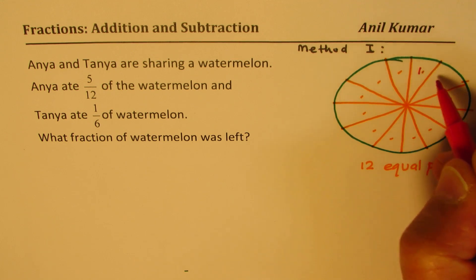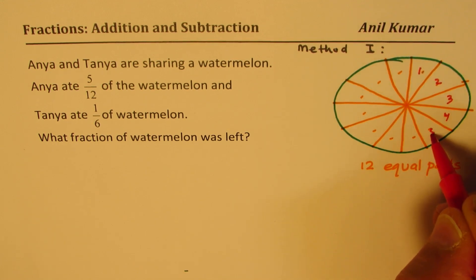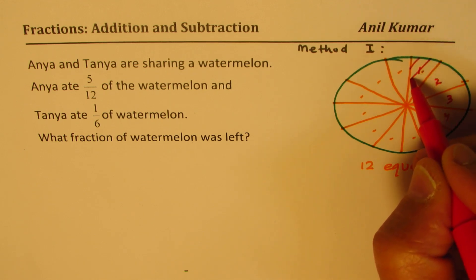So we'll say 1, 2, 3, 4, and 5. So these 5 will shade for Anya.